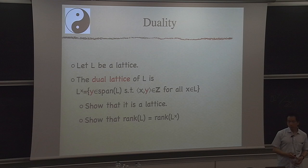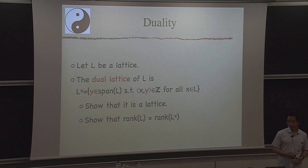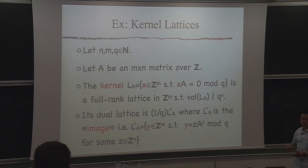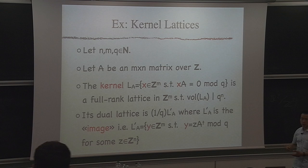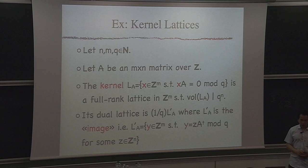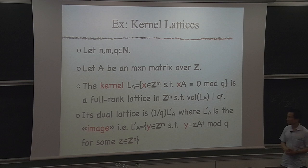To get used to the dual lattice, consider a simple example: take an integer matrix and consider the kernel of that matrix mod Q — all linear combinations of rows congruent to 0 mod Q. This is a full-rank sublattice of Z^n. You can compute what the dual lattice of this lattice is as an exercise to get familiar with duality.